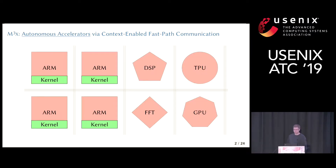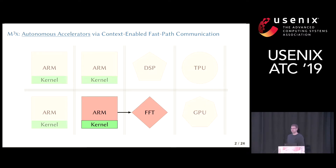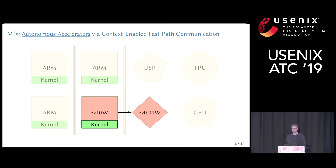Let me start by breaking apart the title. The first part of our work is on autonomous accelerators, because today accelerators typically need to be assisted by the CPU — for example, they cannot access operating system services like file systems or network stacks on their own. This leads to high CPU load and prevents us from benefiting from the energy efficiency of accelerators, since we need to power the CPU during their runtime as well.